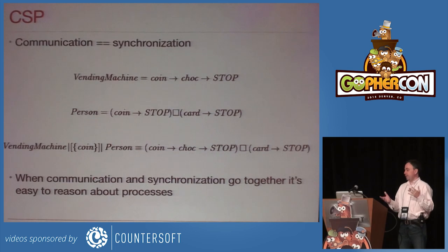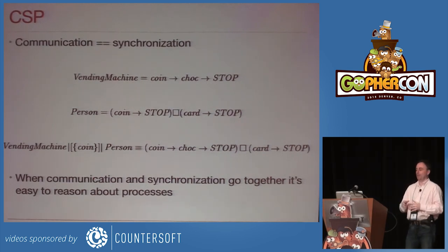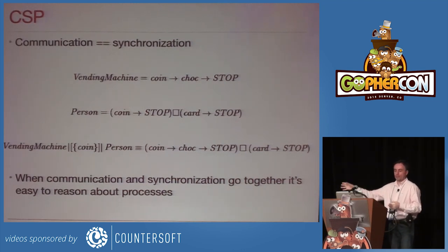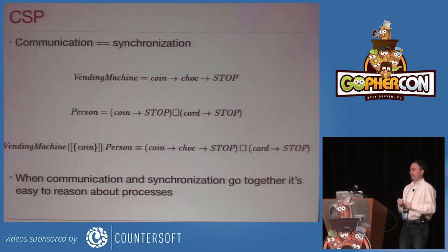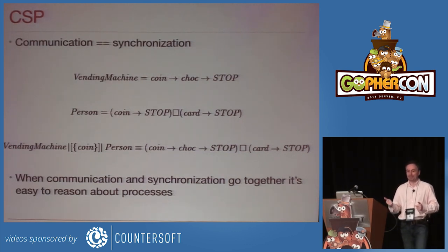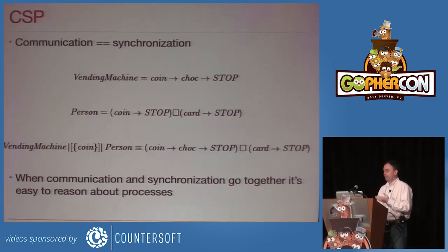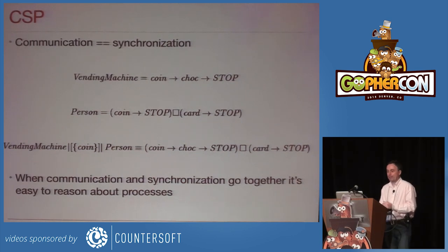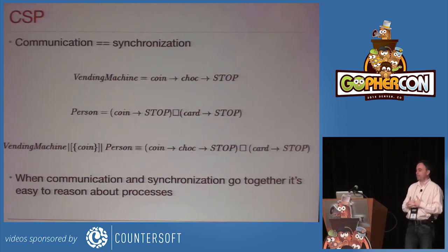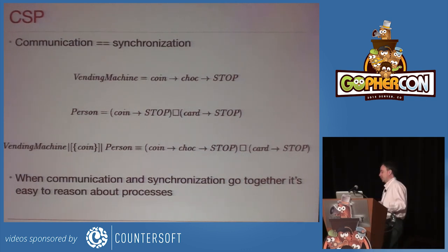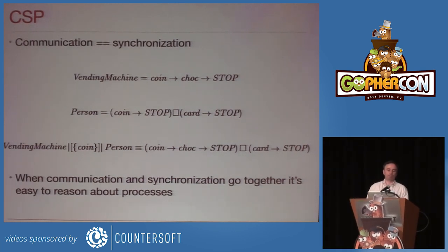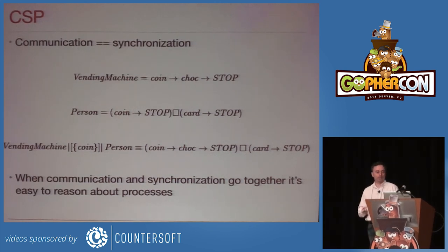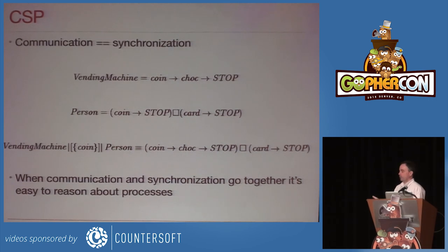Tony Hall was, I think, obsessed with chocolate vending machines — we did actually have one in the programming research group, and almost all the introductory examples are like this. One process is a vending machine: it can participate in a coin event, and then participate in a chocolate event. Then, true to the one in the programming research group, it breaks — that's what 'stop' does. A human can pay by coin or, in a slightly updated version, card, then stop. The interaction of these two things is by synchronization. The communication is the coin — a vending machine and a person get together and agree on participating in a coin event. At that point, the communication has happened; the vending machine knows there's money in it and chocolate comes out. There's no notion of channels in the original thing, so it was all about this communication model.